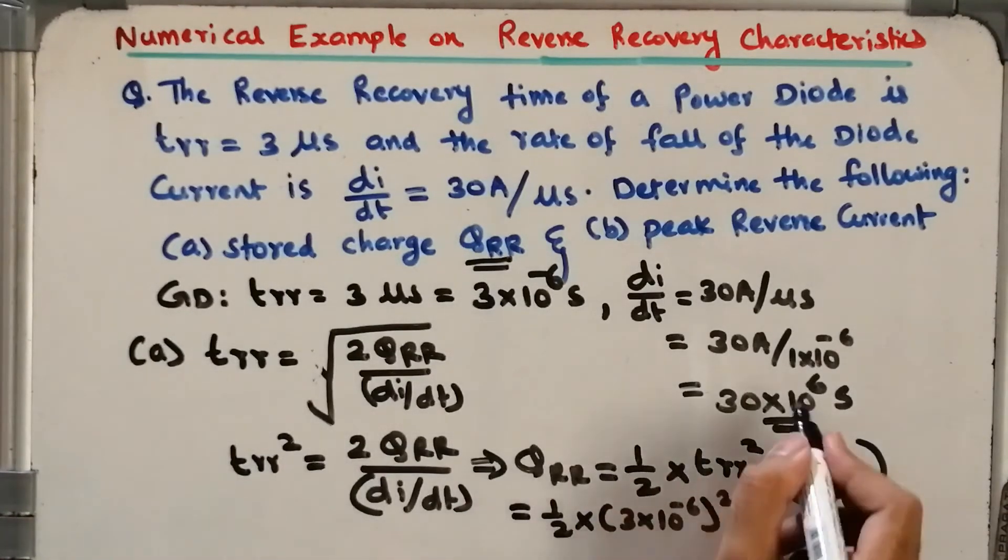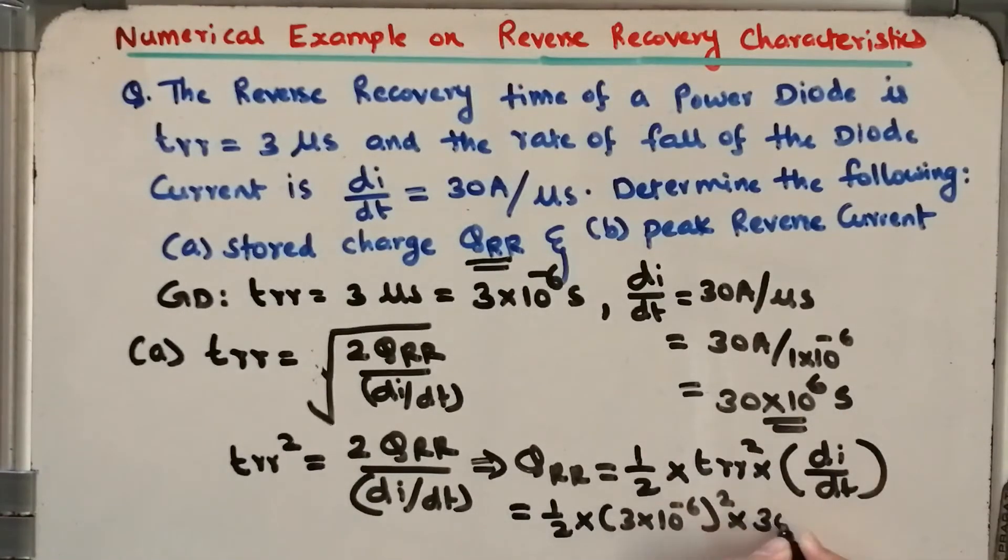dI/dt is 30 times 10 to the power 6 per second. So please compute the values.